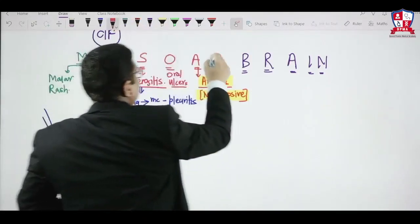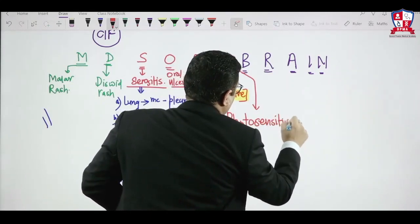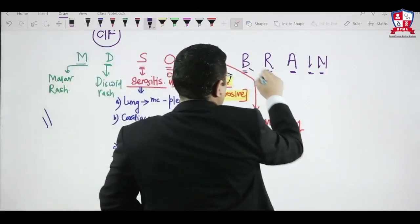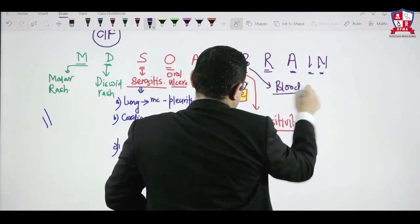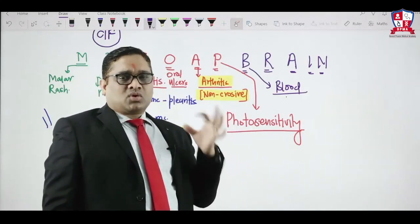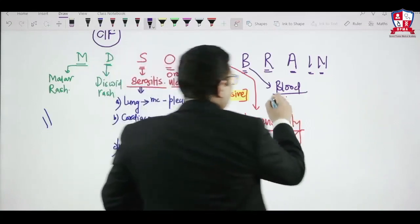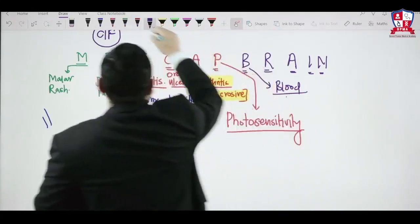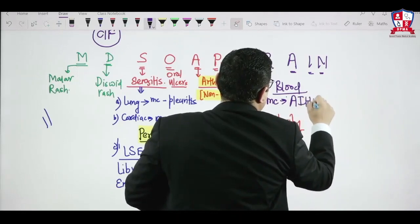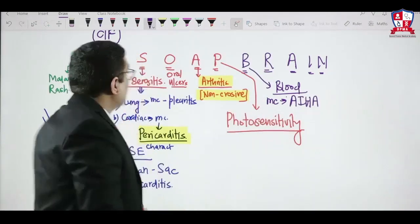P stands for photosensitivity. B stands for blood findings — autoantibodies damage RBCs, WBCs, and platelets, causing autoimmune hemolytic anemia, autoimmune thrombocytopenia, and autoimmune granulocytopenia. The most common hematological manifestation is autoimmune hemolytic anemia.